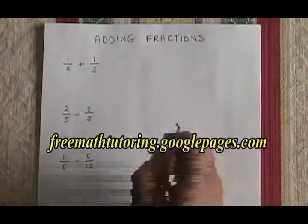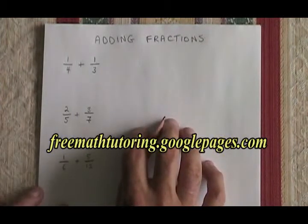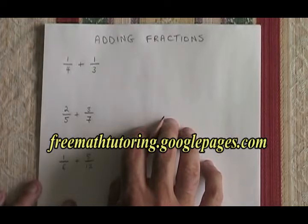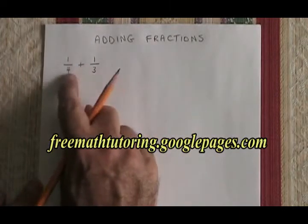Adding fractions requires a common denominator. We would prefer to use the lowest common denominator, and you can find that by listing the multiples of the two denominators you started with.